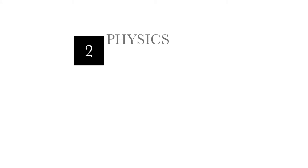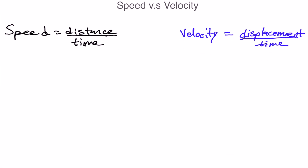In this video I'm going to be talking about the difference between speed and velocity. This is a big concept a lot of new students get confused with in physics. Speed is distance over time — that's the formula — while velocity is displacement over time. The key words here are distance and displacement.